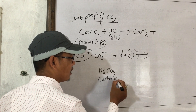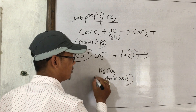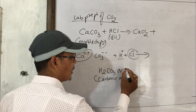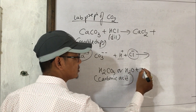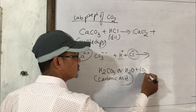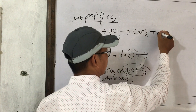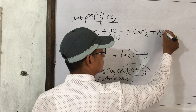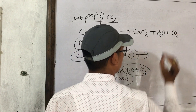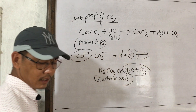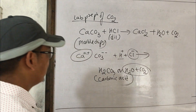The products are carbonic acid H₂CO₃, which then decomposes to give H₂O plus CO₂. So we get carbon dioxide gas as one of the products.